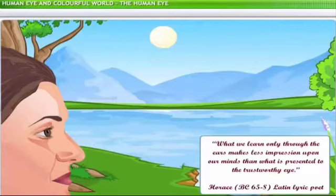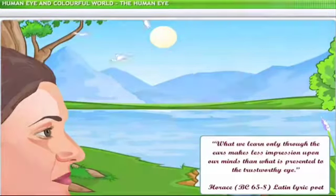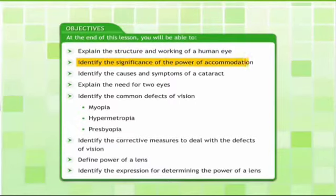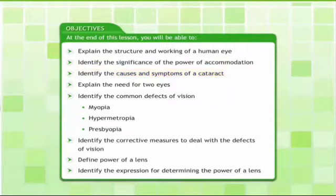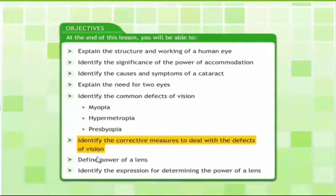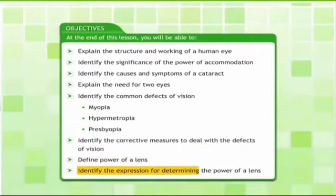In this lesson, you will learn about the structure and working of a human eye, defects of vision and the remedies for these defects. By the end of this lesson, you will be able to explain the structure and working of a human eye, identify the significance of the power of accommodation, identify the causes and symptoms of a cataract, explain the need for two eyes, identify the common defects of vision — myopia, hypermetropia and presbyopia — identify the corrective measures to deal with the defects of vision, define the power of a lens, and identify the expression for determining the power of a lens.